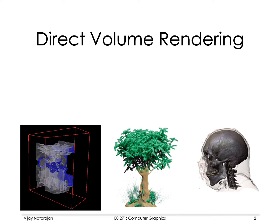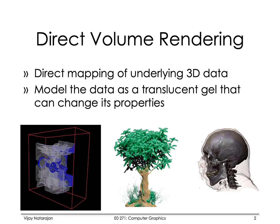The technique that we are going to study is called direct volume rendering. Isosurface extraction is often referred to as indirect volume rendering where we are visualizing the volume indirectly via extracting isosurfaces. In contrast, the approach that we are going to study today is going to use a direct mapping of the underlying 3D data using a transparent or translucent gel to represent the volume. The idea is that we associate different properties to this translucent gel, properties that depend on the scalar values, and hence obtain an interesting and useful visualization of the volume.